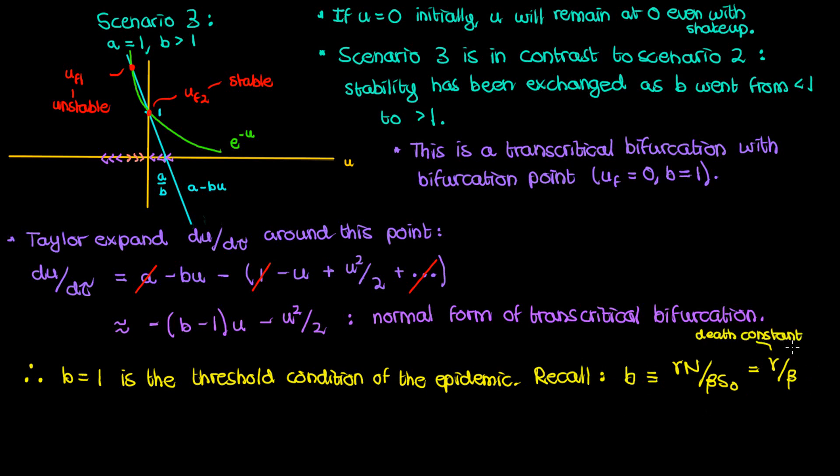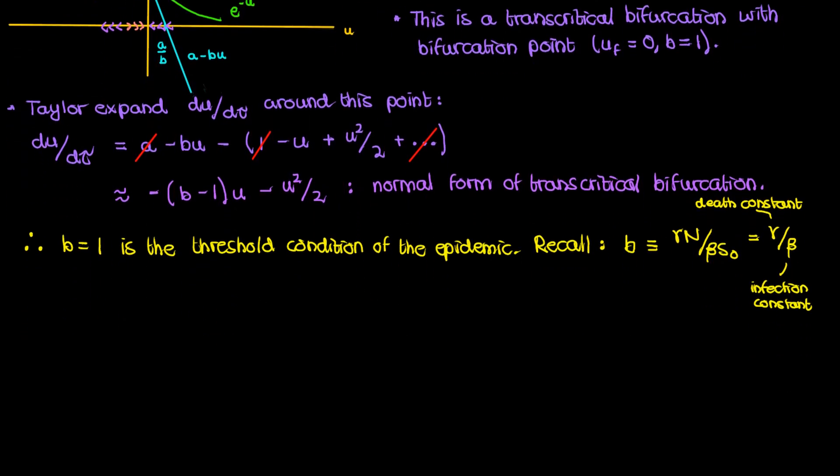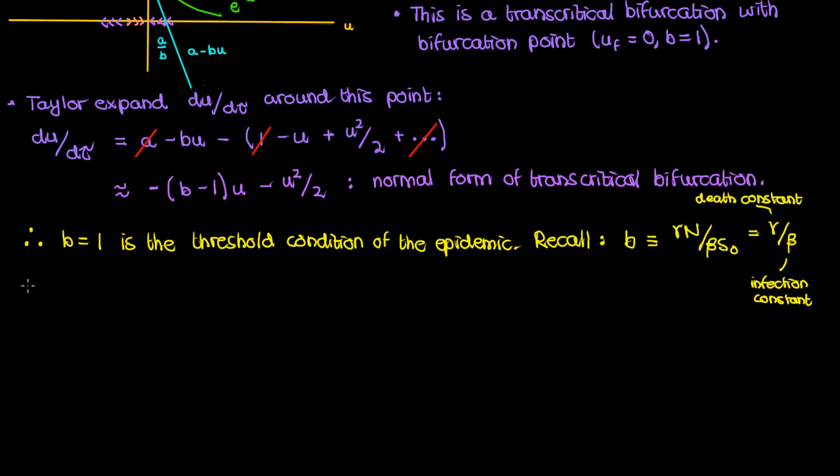Now gamma is the proportionality constant affecting the rate at which infected people die. And beta is the proportionality constant affecting the rate at which healthy people get infected. So if beta is small that means few healthy people end up getting infected which means that hardly anyone will die even though gamma itself may be very large. That's because if there isn't anyone infected there isn't anyone there to die in the first place.